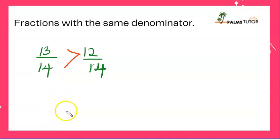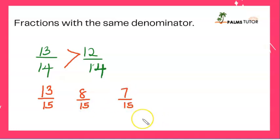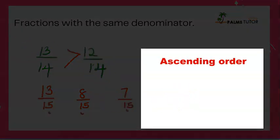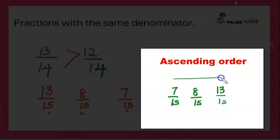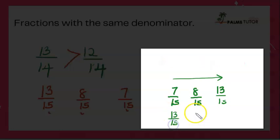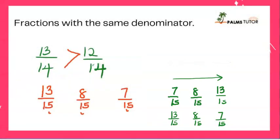Now let's arrange three fractions in order: 13 over 15, 8 over 15, and 7 over 15. Since they all have the same denominator, we compare numerators. In ascending order — smallest to biggest — that's 7 over 15, then 8 over 15, then 13 over 15. In descending order — biggest to smallest — that's 13 over 15, then 8 over 15, then 7 over 15.